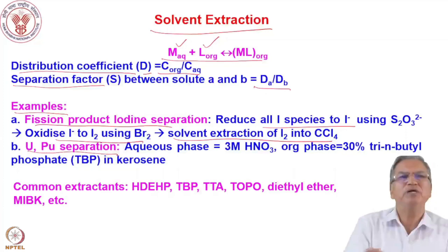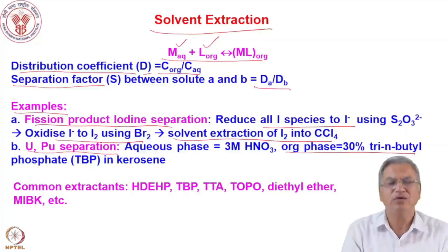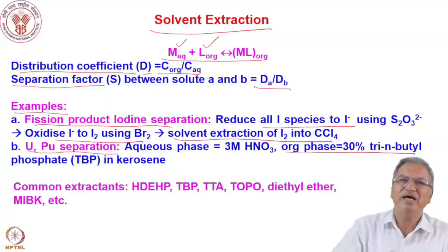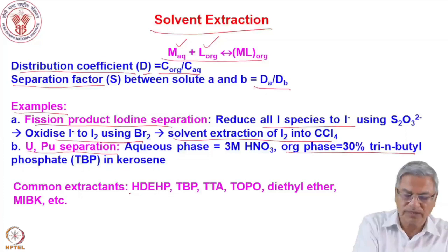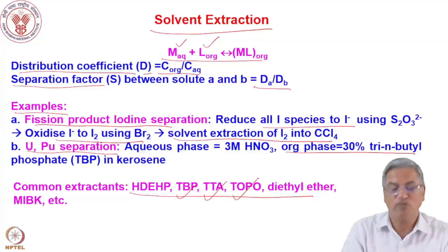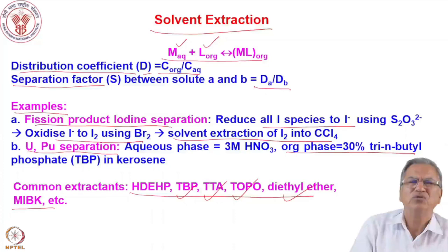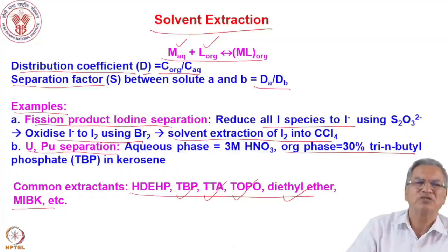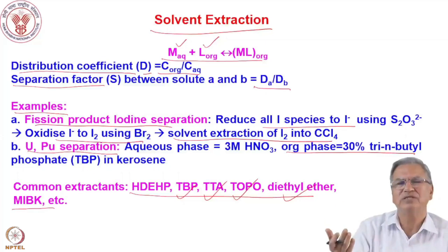Uranium and plutonium can be separated using 30% tributyl phosphate in an organic solvent like dodecane or kerosene, with 3 molar nitric acid as the aqueous phase — they have very high distribution coefficients and go into the organic phase. Many reagents are used for solvent extraction: di-2-ethylhexyl phosphoric acid, tributyl phosphate, phenyl trifluoroacetone, trioctyl phosphine oxide, diethyl ether, methyl isobutyl ketone, and others. The distribution coefficient depends upon the acidity of the aqueous phase and the concentration of the ligand in the organic phase, so you play with acidity to achieve separation.